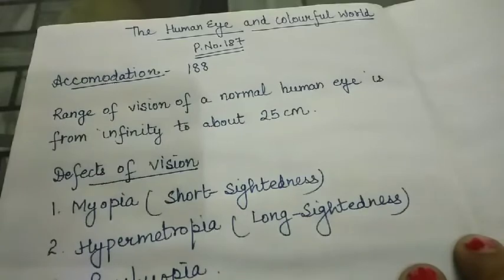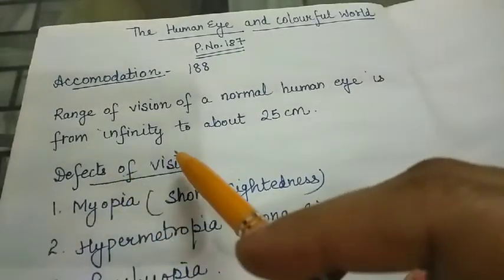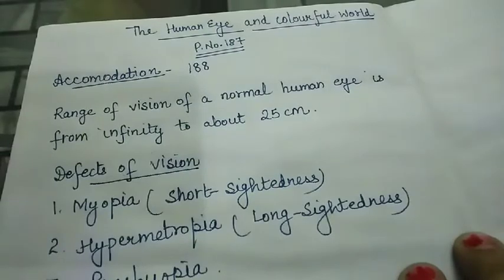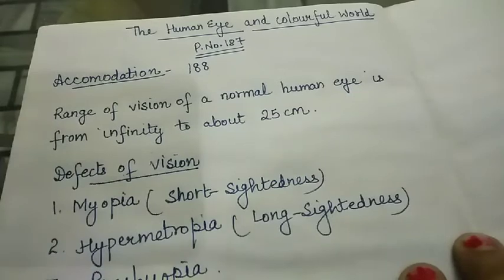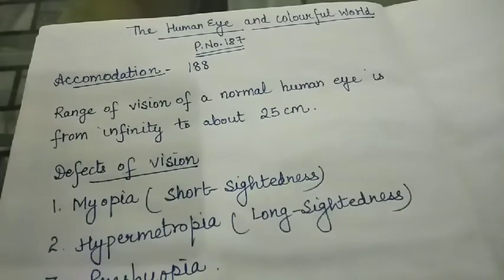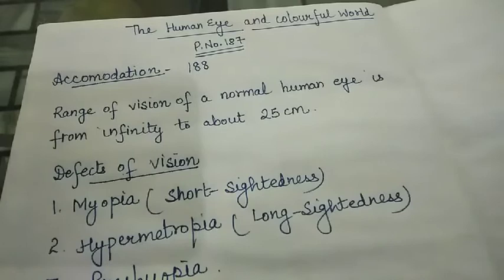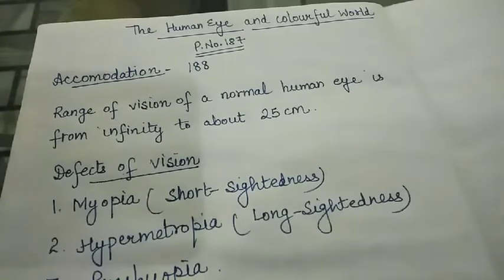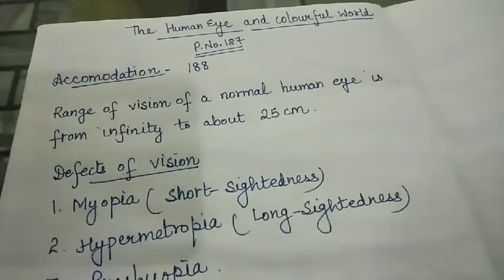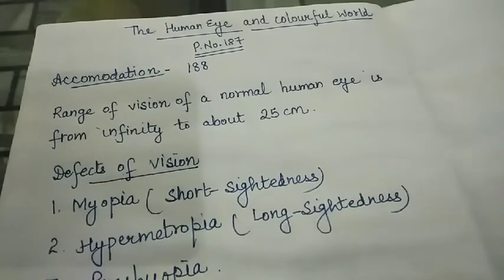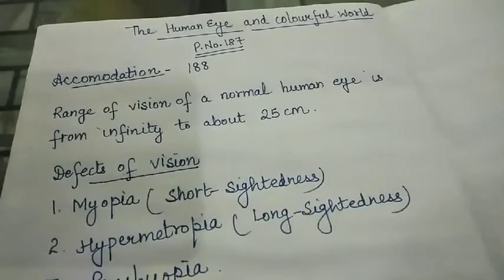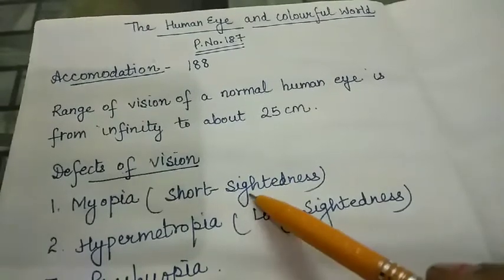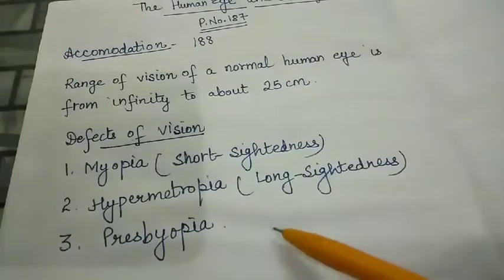Next topic we have to take is defects of vision. Sometimes the eye of a person cannot focus the image of an object on the retina properly. In such cases, the vision of a person becomes blurred, and he cannot see either the distant objects or nearby objects clearly. The person is said to have a defect of vision. The three common defects of vision are myopia, hypermetropia, and presbyopia. All these defects are present in your NCERT on page number 189.